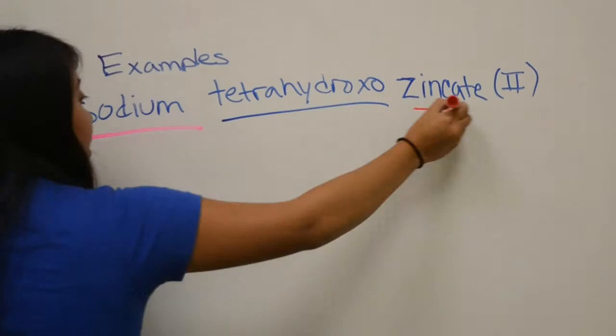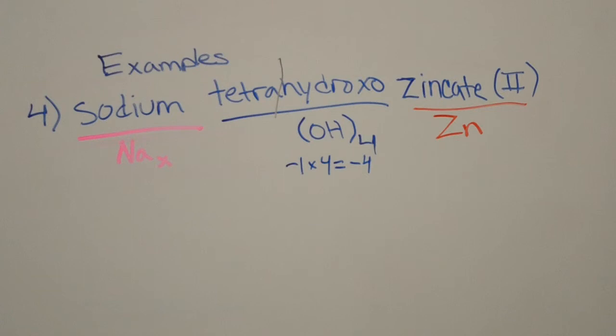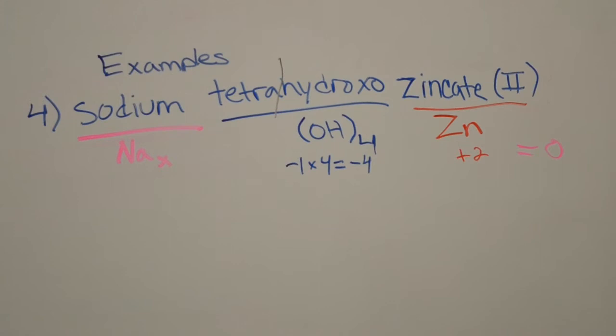We know that hydroxyl has a negative 1 charge, since there are 4, an overall negative 4 charge. And zincate has a positive 2 charge. We need an overall charge of 0. Therefore, the subscript for sodium has to be 2, giving us an overall formula as presented.